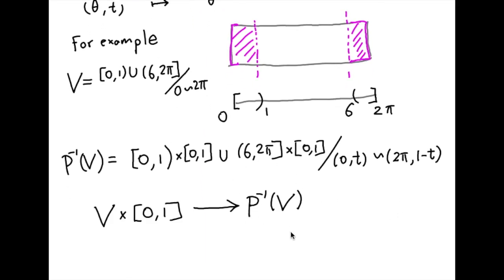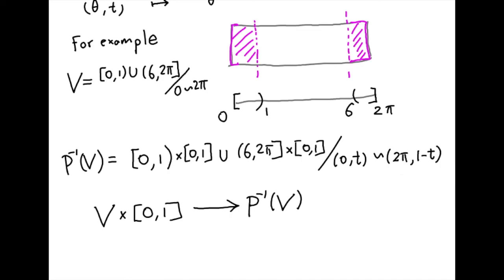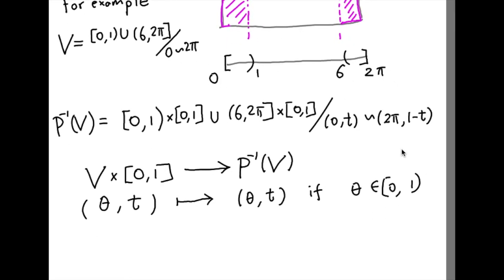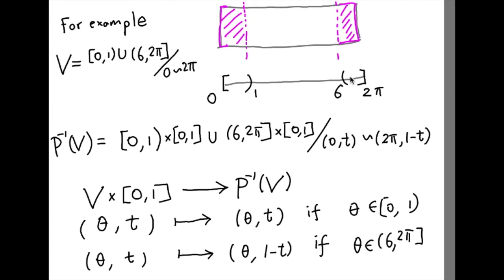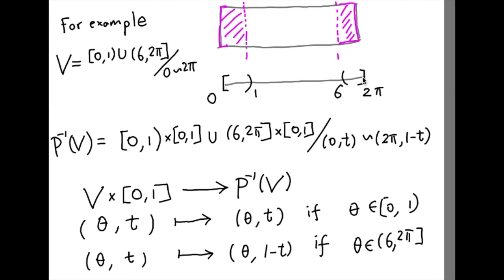The preimage here is basically this interval × [0, 1] interval. What are the maps? Not surprisingly, (θ, t) is mapped to (θ, t), but only when θ is between 0 and 1.